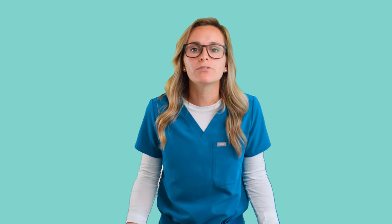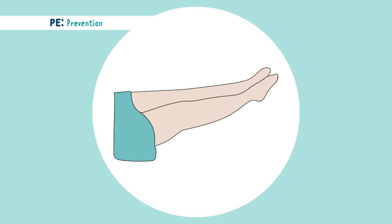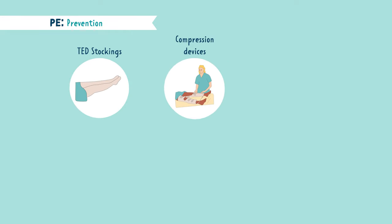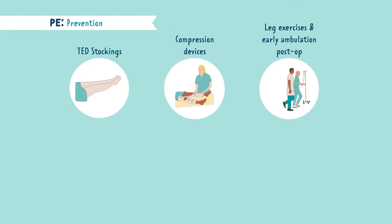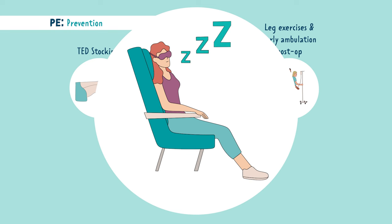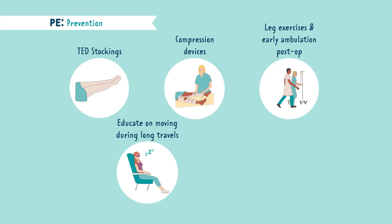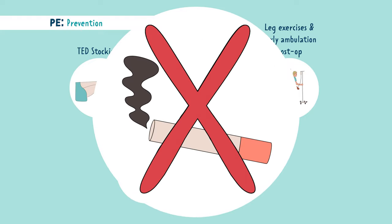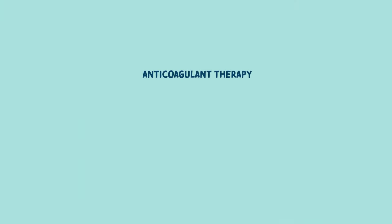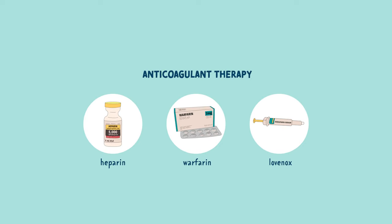Much like a DVT or any unwanted clot, we want to prevent them from forming in the first place. The use of TED stockings and compression devices help promote blood flow, especially when in bed or post-operative. We encourage leg exercises and early ambulation for post-op patients — this is extremely important to get the blood moving. If someone will be traveling on a long flight or car ride, remind them to stand, walk around, or perform simple leg exercises. Encourage patients to stop smoking, since smoking hurts our vascular system. Educate your patient about any anticoagulant therapy if ordered — things like heparin, warfarin, and Lovenox — stressing the importance of taking them as scheduled.